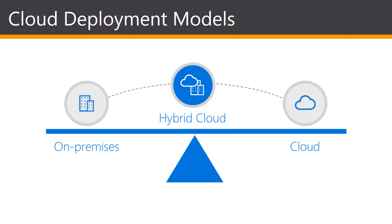On-premises deployment doesn't provide many of the benefits of cloud computing, but is sometimes sought for its ability to provide dedicated resources or for compliance reasons. In the middle we have the hybrid cloud — a way to connect infrastructure and applications between cloud-based resources and existing on-premises resources. The most common method of hybrid deployment is between the cloud and existing on-premises infrastructure, to extend and grow an organization's infrastructure into the cloud while connecting cloud resources to the internal system.